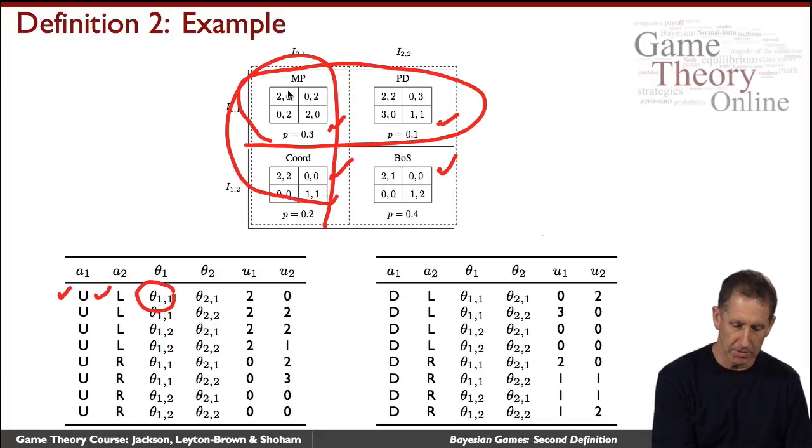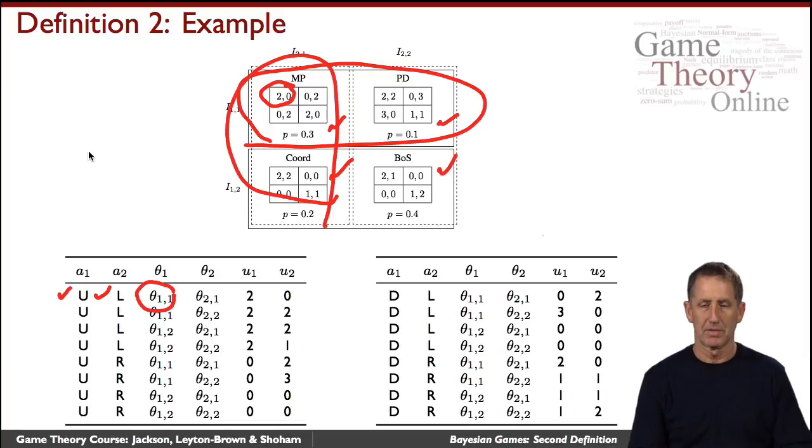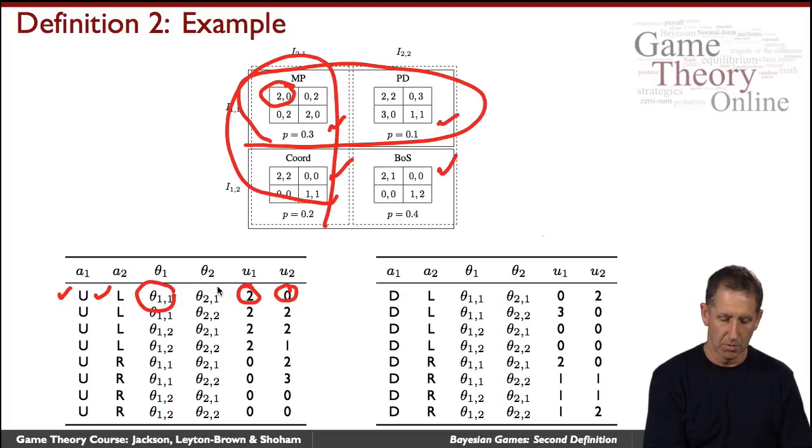Well, what's the payoff then? Well, the payoff corresponds now to this cell right there is what happens when they play up and left. And so you get two and zero when the types are as they are.